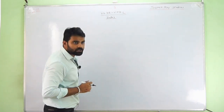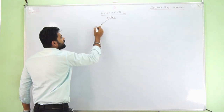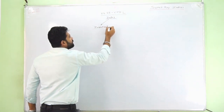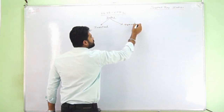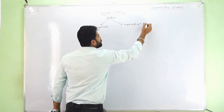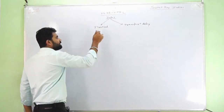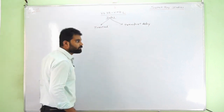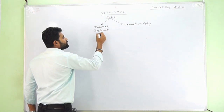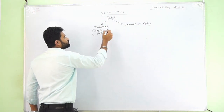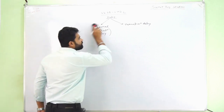First of all, there are two types of delays: inertial delay and transport delay. We will deal with simulation and delta delays later. Inertial delay is actually the default delay of VHDL, and transport delay is not a default delay. So I will concentrate first on inertial delay.